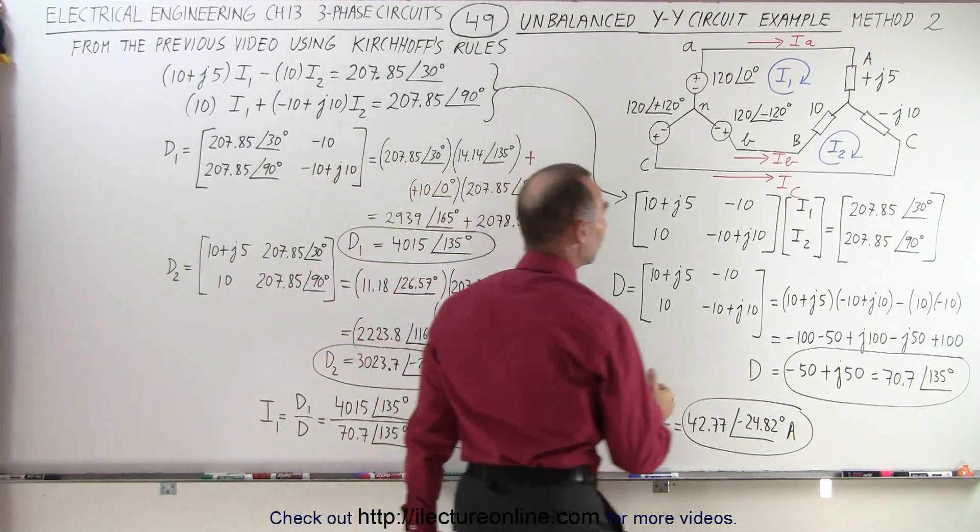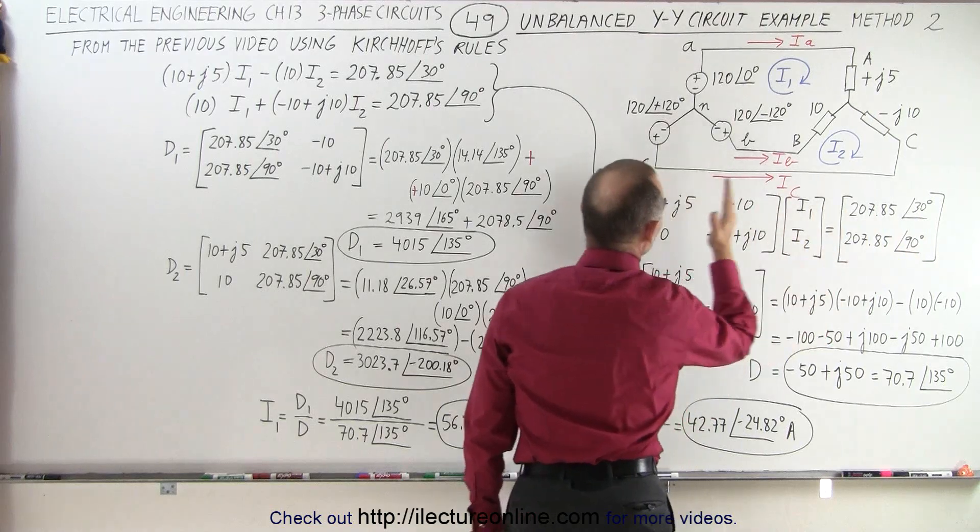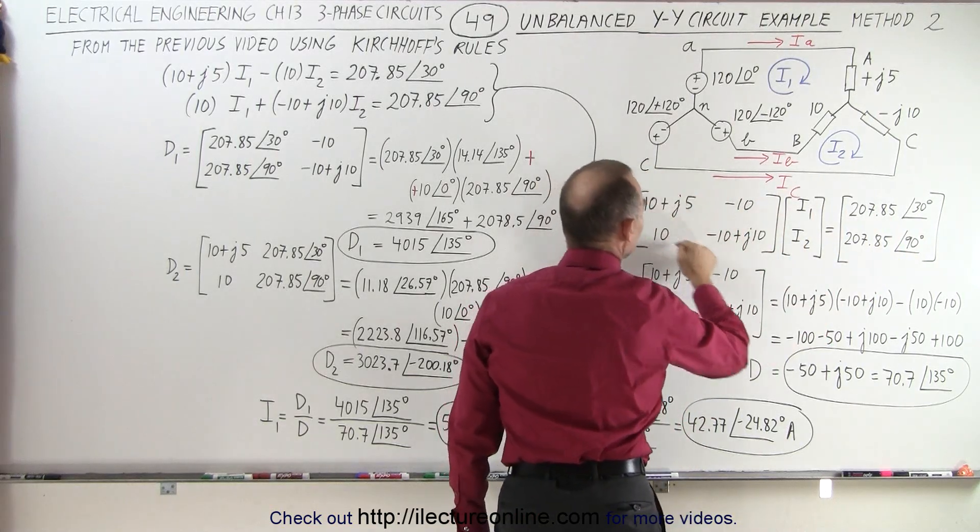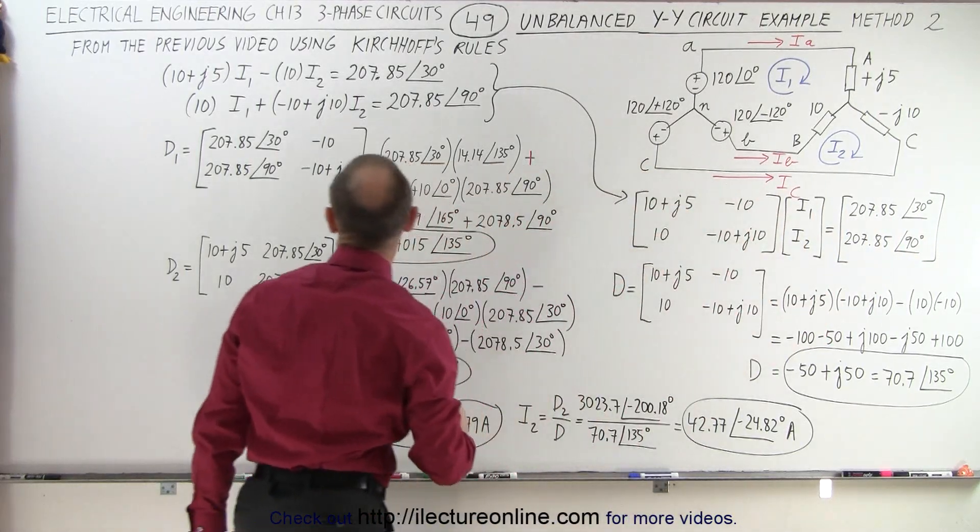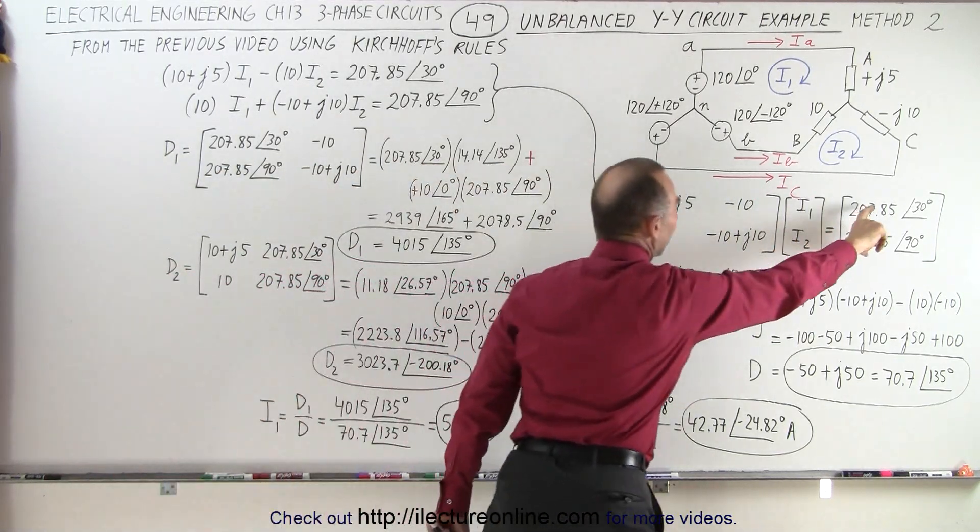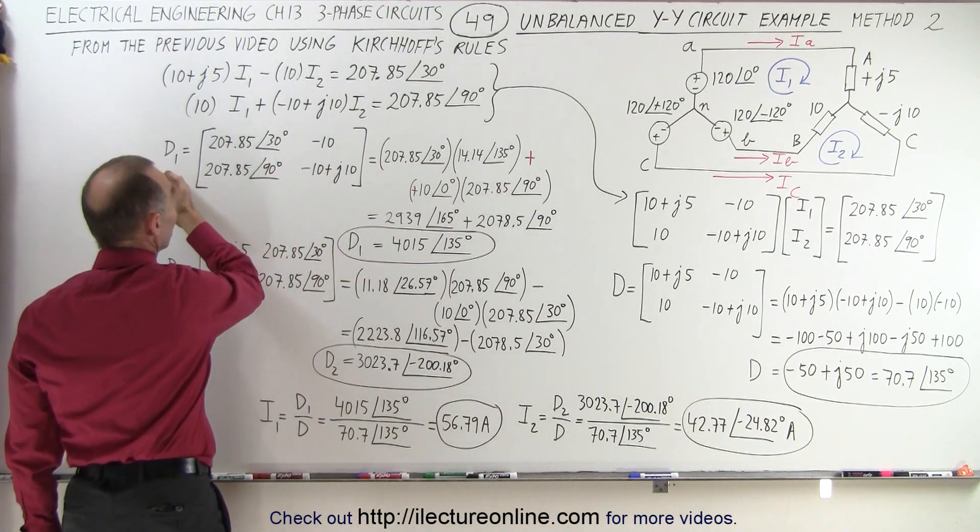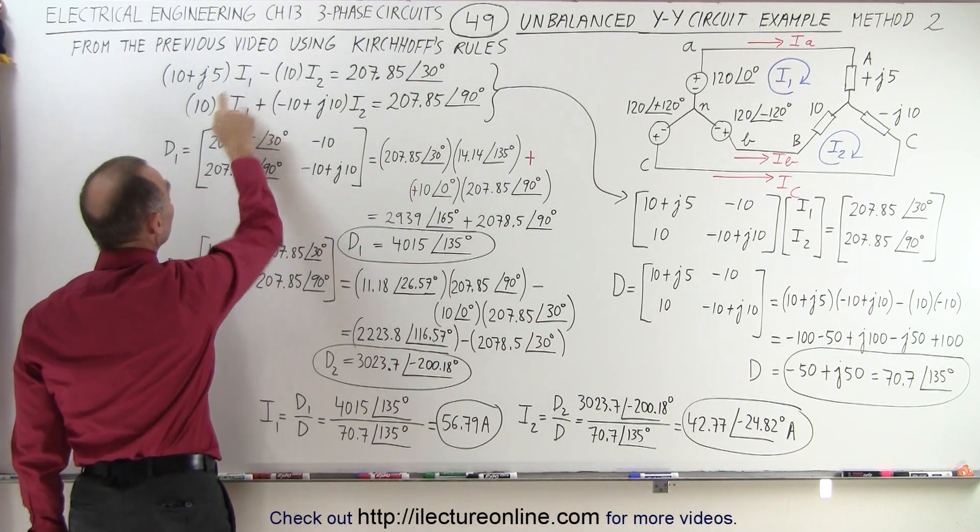The next thing we do is we find what we call D1 by taking these elements and putting them right here and then calculating this matrix again. So when we look over here, we replace the first front two elements by these two values right here. And then again, that becomes determinant 1 associated with I1.